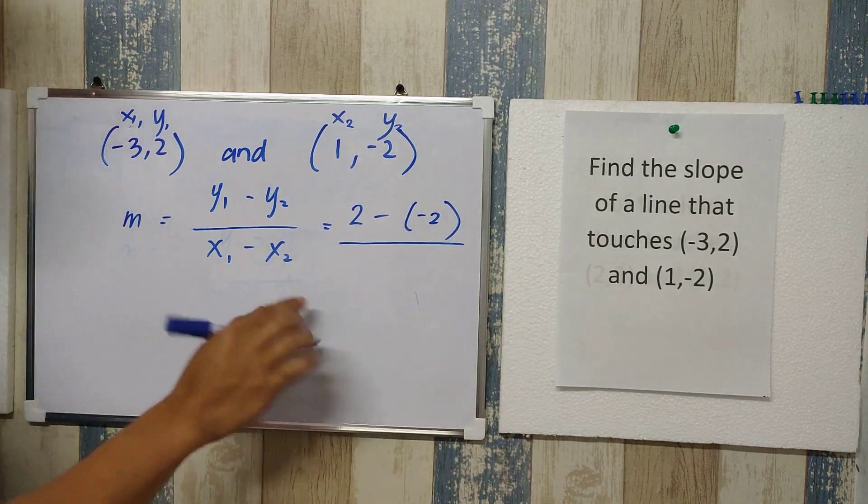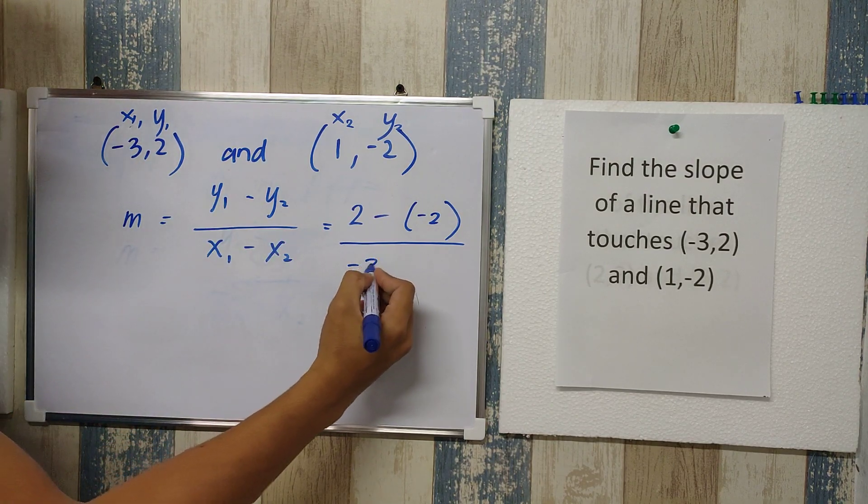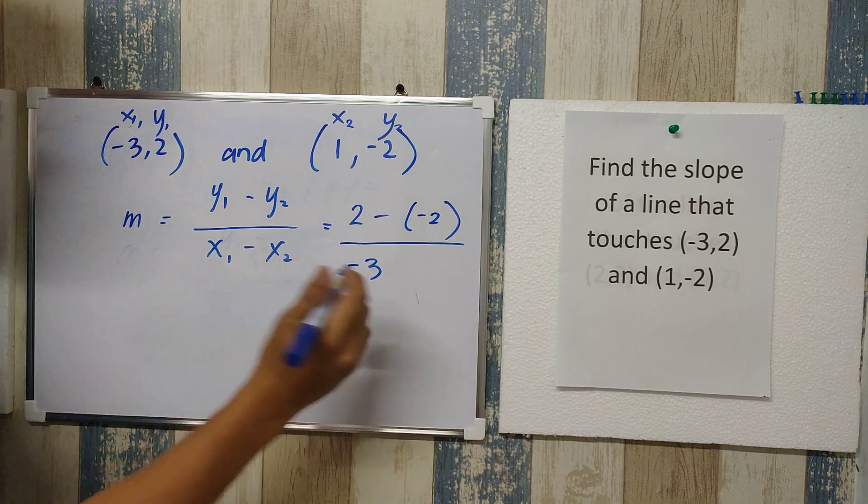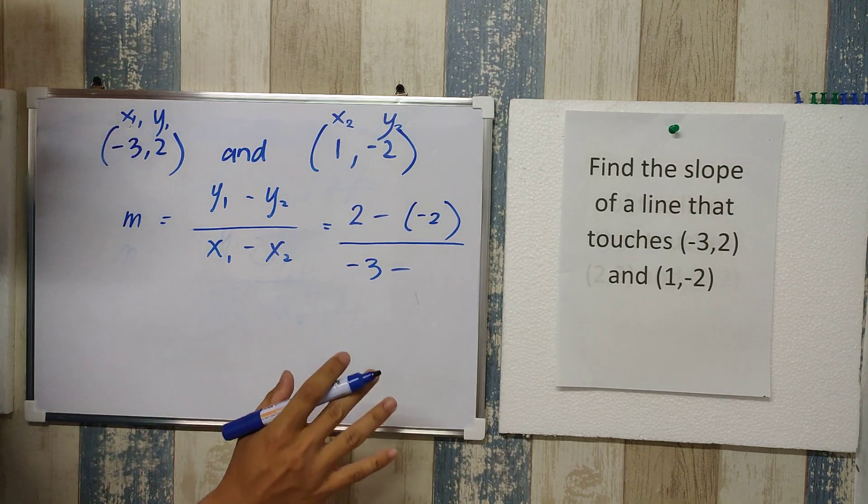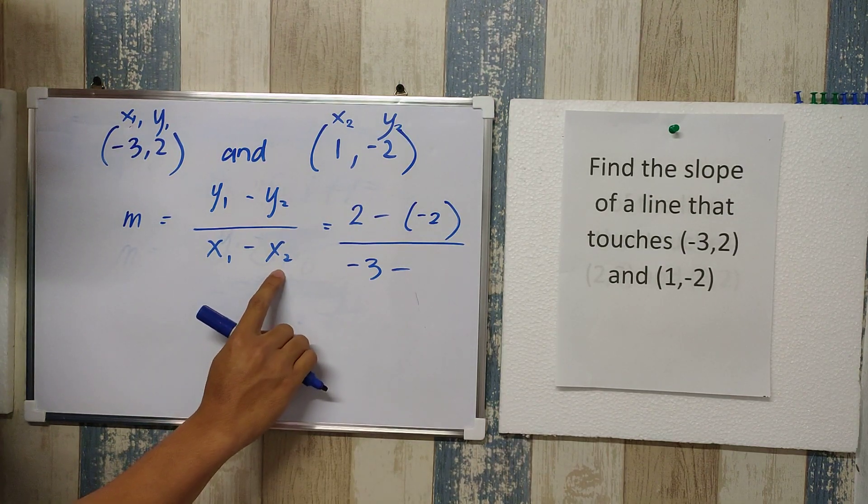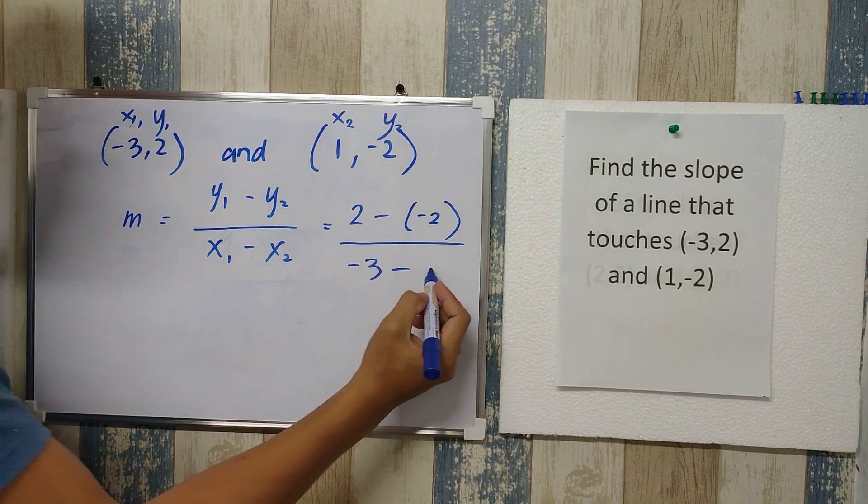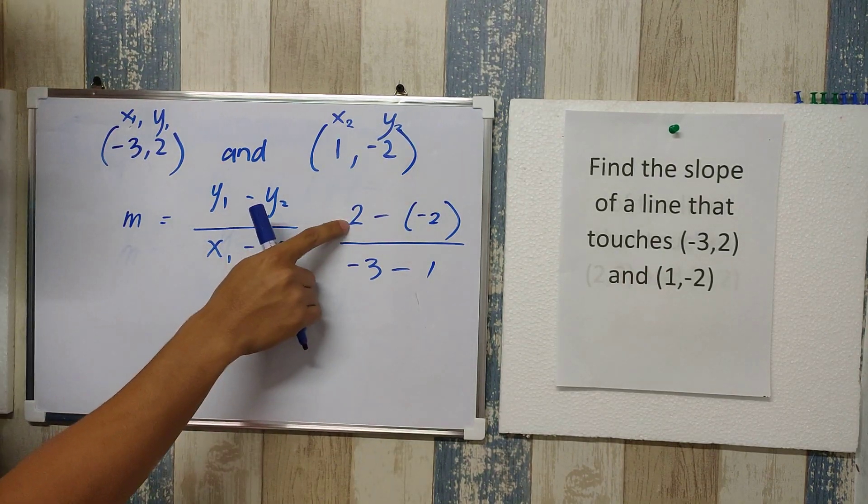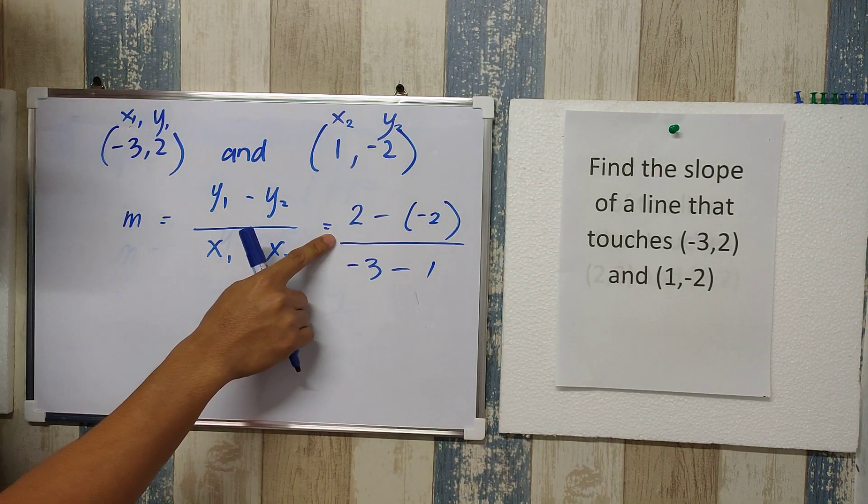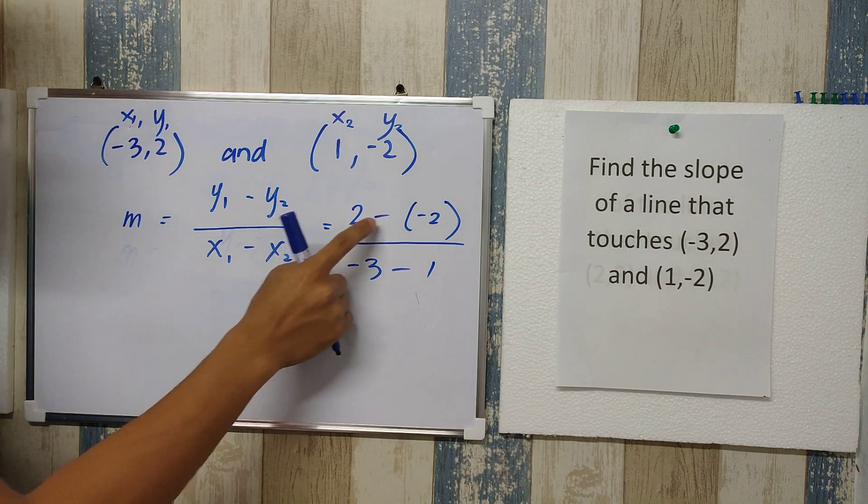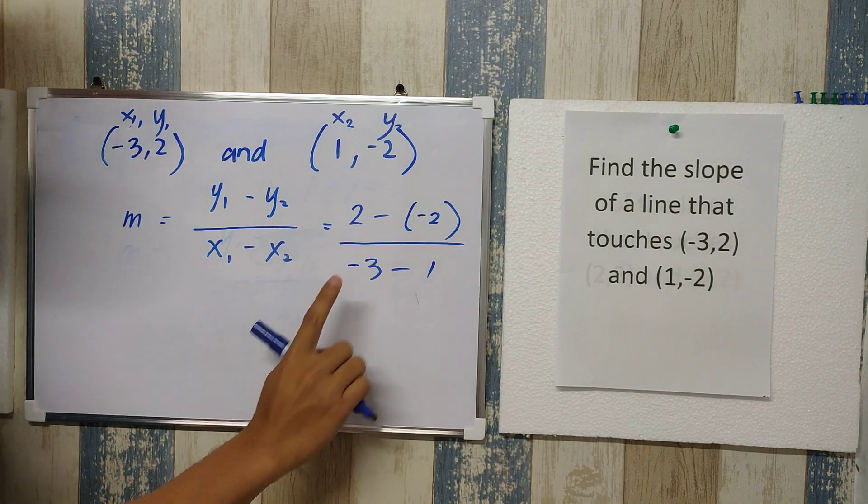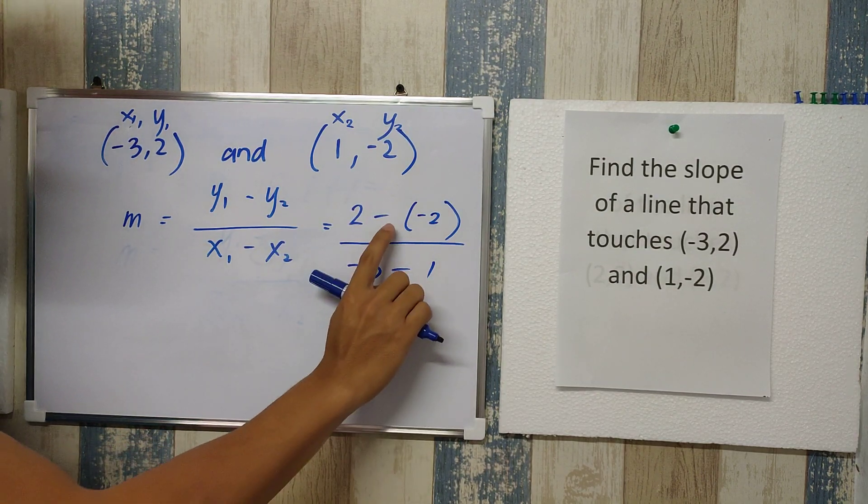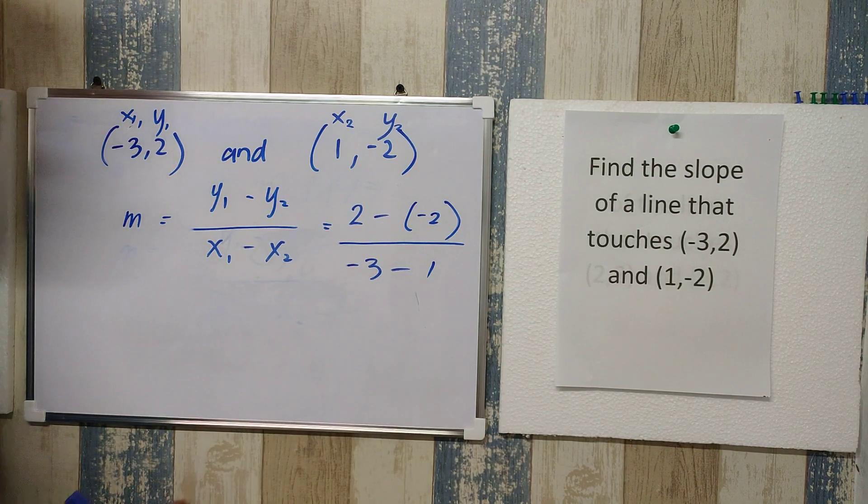The fraction bar and then x sub 1 is negative 3. We also have here a negative sign, so we need to copy that again. And then lastly is the x sub 2, which is 1. So if we look at this expression, 2 minus negative 2, negative 3 minus 1, let's make this a valid operation. Instead of having 2 minus minus 2, we will do a 2 plus 2 on the numerator and negative 3 negative 1 on the denominator.